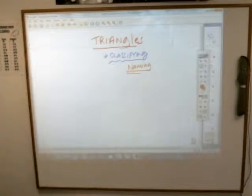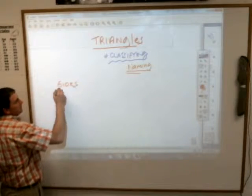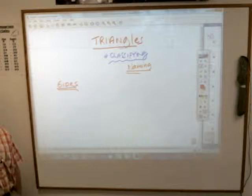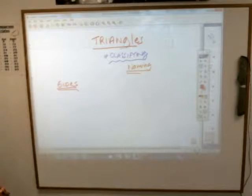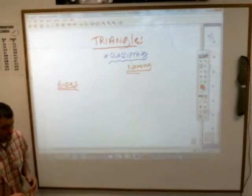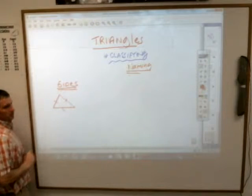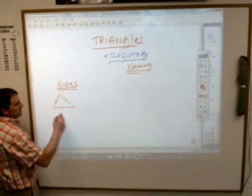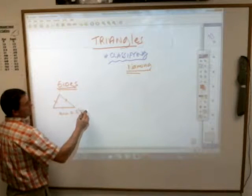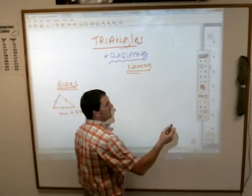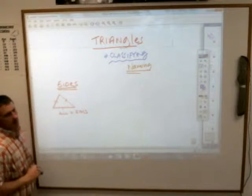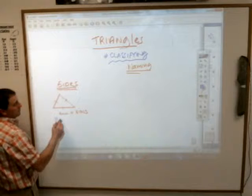We can classify them by their sides — the length of their sides. When you have a three-sided shape, you only have three options. One is that all of their sides are equal, which we show with a little slash mark. All equal sides — that's one choice. Anybody know what we call an all-equal-side triangle? Mackenzie? Equilateral. That's right, an equilateral triangle.